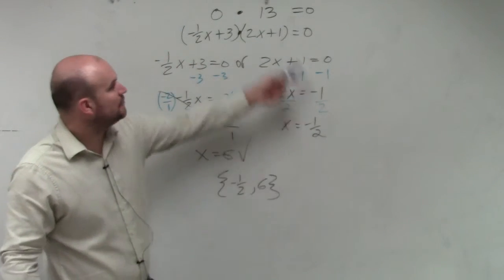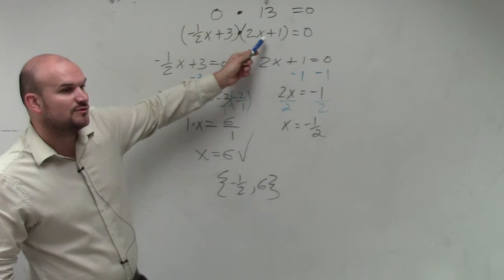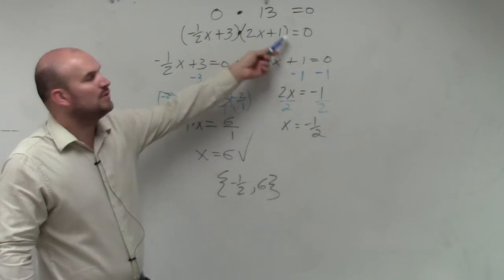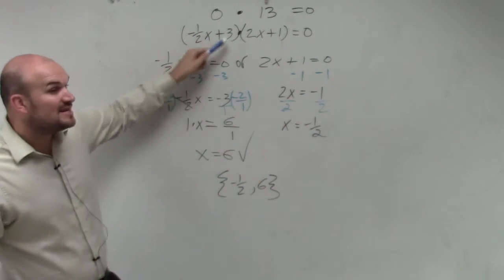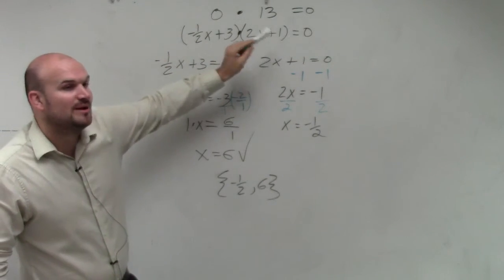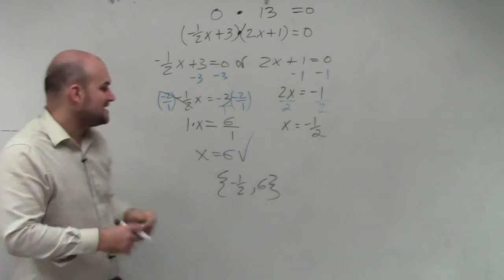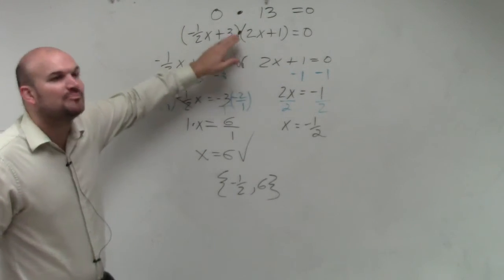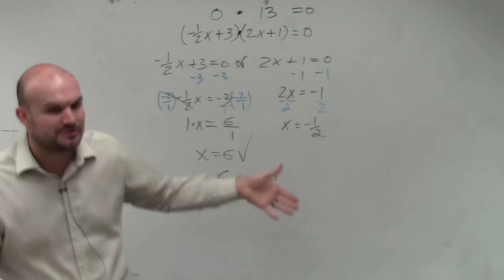And guess what? When you plug negative 1 half in here, 2 times negative 1 half is negative 1. Negative 1 plus 1 is 0. So it doesn't even matter what it is over here, because you're multiplying by 0. It's always going to equal 0. So yes, these are the solutions that make the product equal to 0. They're not actually going to be 0, though.